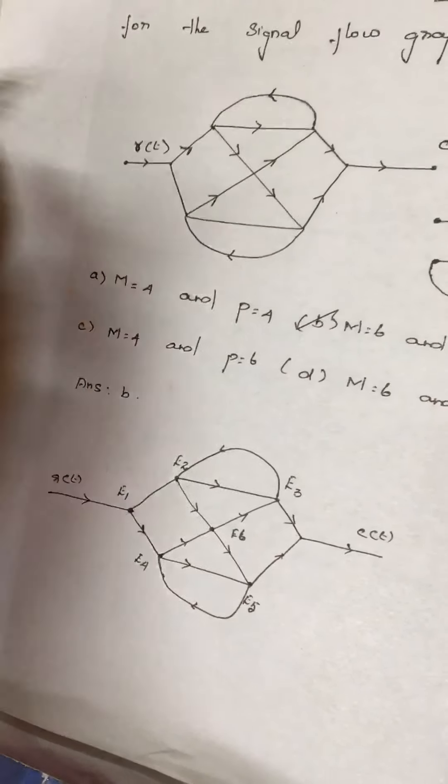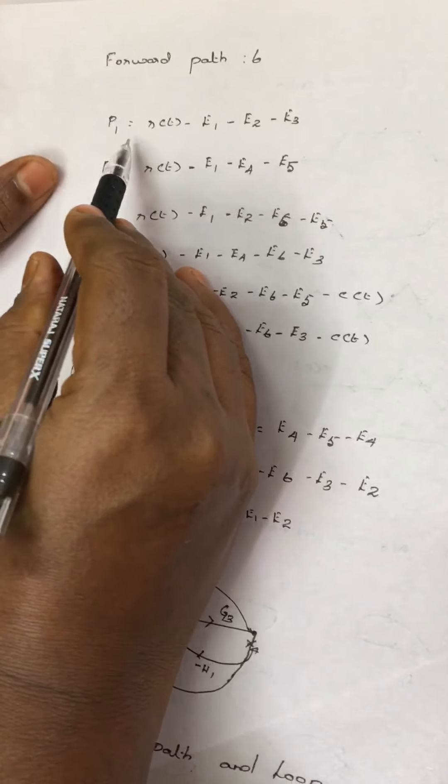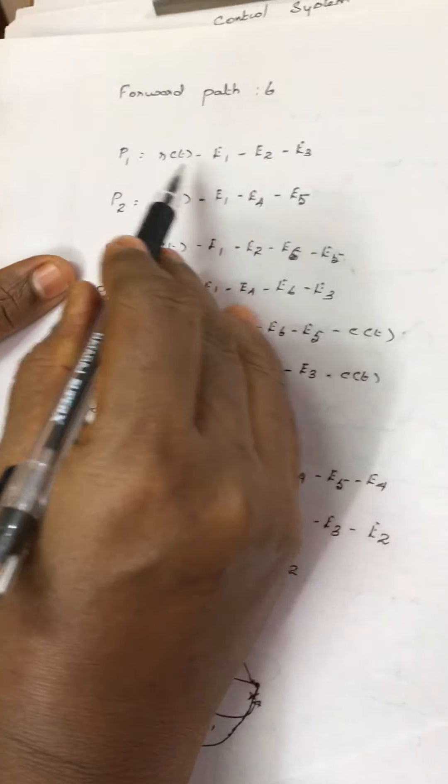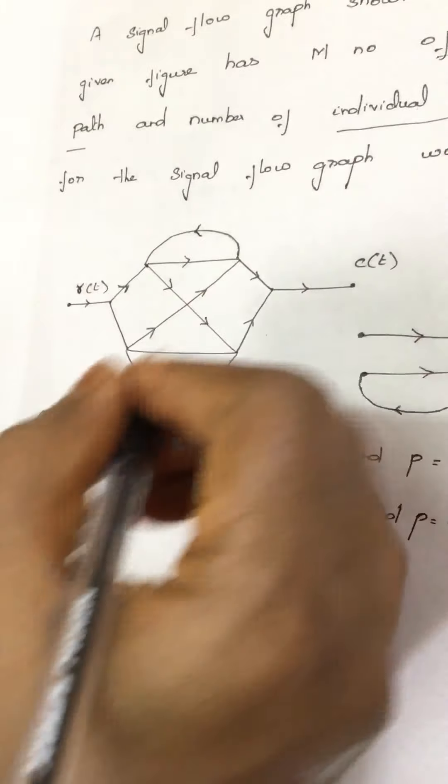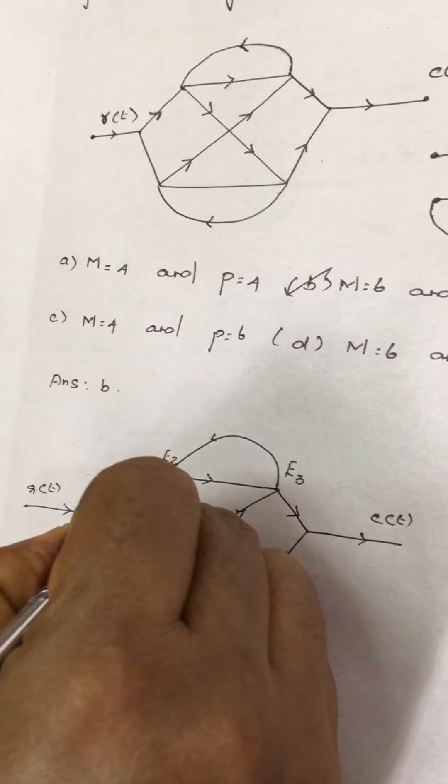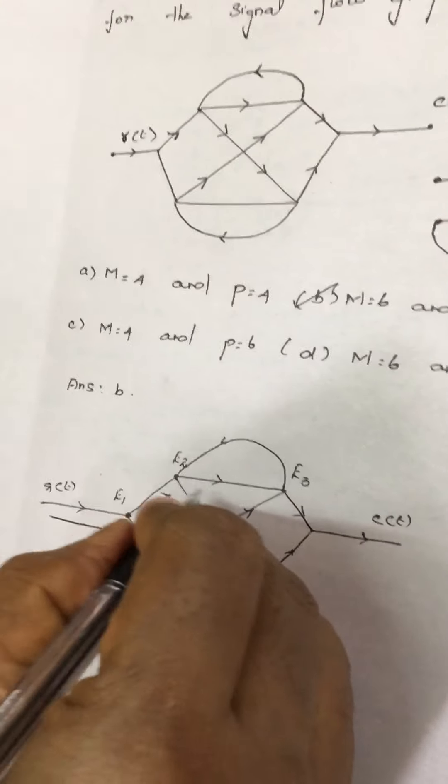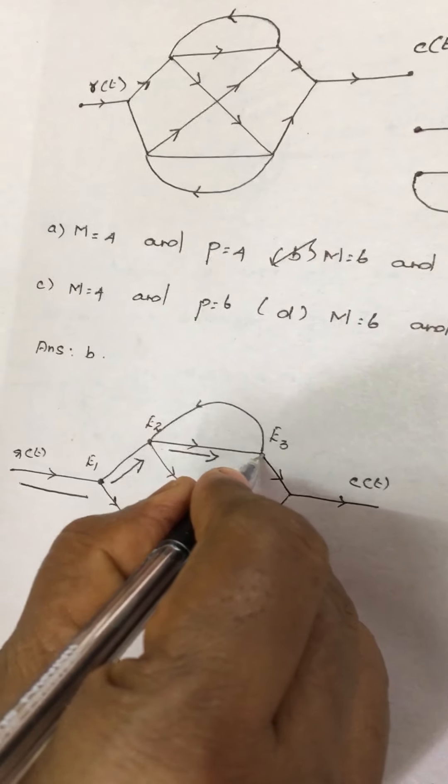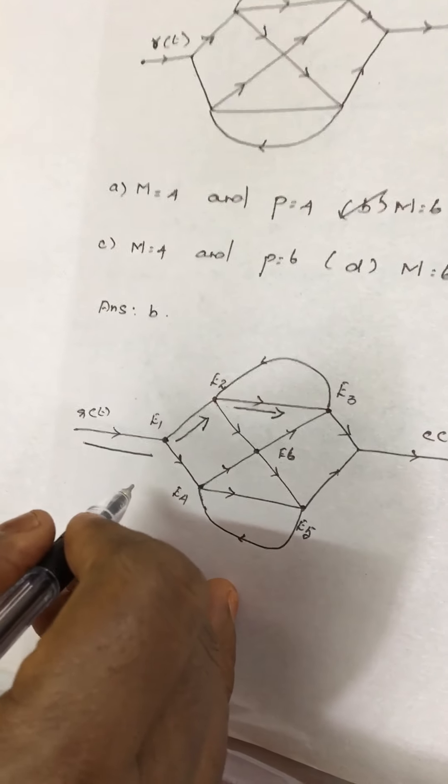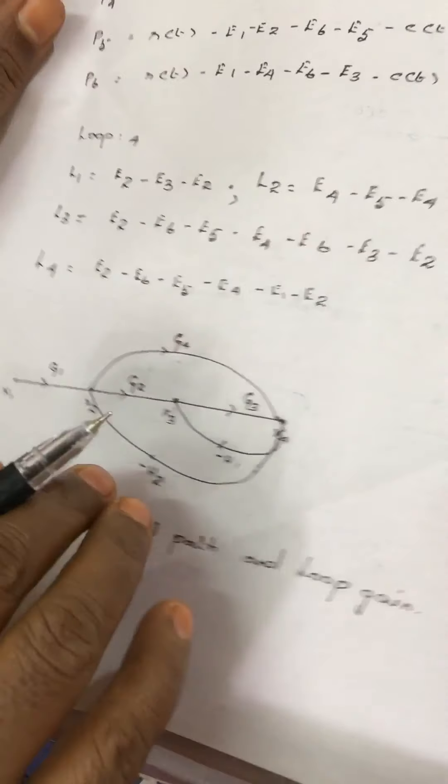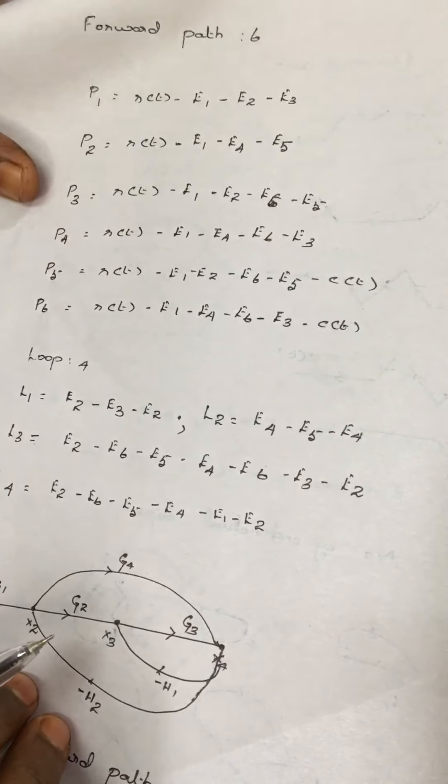The forward paths for the provided diagram: there are six forward paths. P1 is equal to R of T to E1, E2, to E3. The first forward path starts from R of T, E1, E3, and ends at node E3. Next forward path P2 equals R of T to E1, E4, E5.